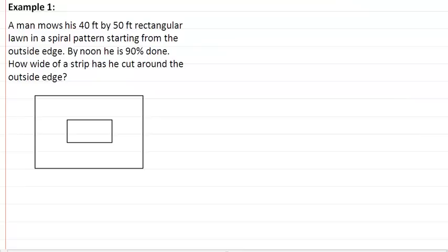In example one, we have a man that mows his 40 foot by 50 foot rectangular lawn in a spiral pattern starting from the outside edge. So we have 40 feet over here and we have 50 feet here. By noon he is 90% done. How wide of a strip has he cut around the outside edge?